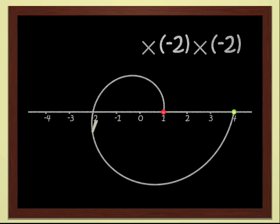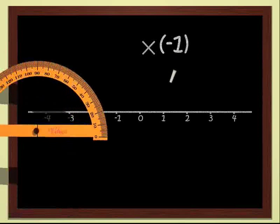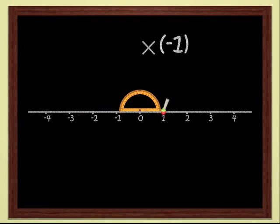If we multiply twice by minus two, we have multiplied by four. Multiplying by minus one is very easy. Each point is sent to the symmetrical point with respect to the origin. In other words, we do a half turn, a rotation by 180 degrees, if you like.